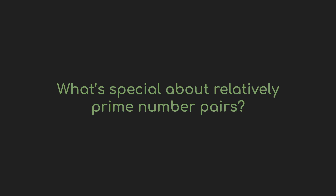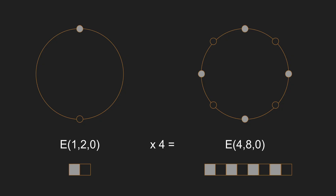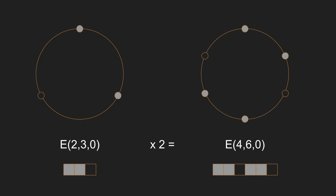Continuing with the idea of relatively prime pairs — why does it matter if two numbers have a shared divisor? As an example, look at E(4,8): four and eight both share four as a divisor, and the pattern is just on-off-on-off-on-off-on-off. If we divide both numbers by the shared divisor of four, we get E(1,2) — the simplest of rhythms, two steps, one on, one off. E(4,8) is just repeating E(1,2) four times. A shared divisor indicates the repetition of a pattern. Similarly, E(4,6) has a shared divisor of two, reducing to E(2,3) repeated twice. That's why we tend to deal with pairs of numbers with no shared divisors — having a common divisor just makes things repeat, and we can achieve that other ways.